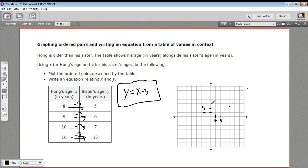So that is how to graph ordered pairs from a table of X and Y values and then determine an equation from it.